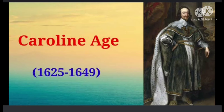This was the time of the English Civil War, fought between the supporters of the king and the supporters of Parliament. The supporters of the king were known as the Cavaliers, and the supporters of Parliament were known as Roundheads, from their custom of wearing their hair cut short.